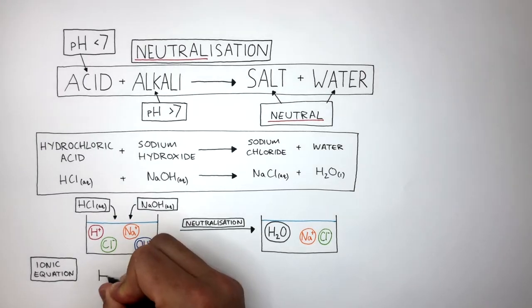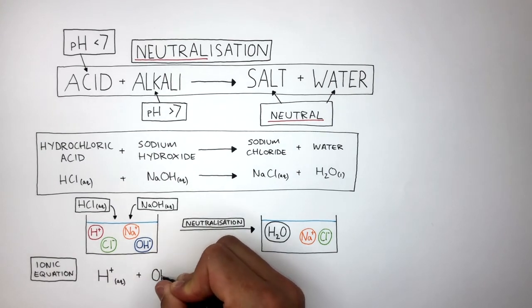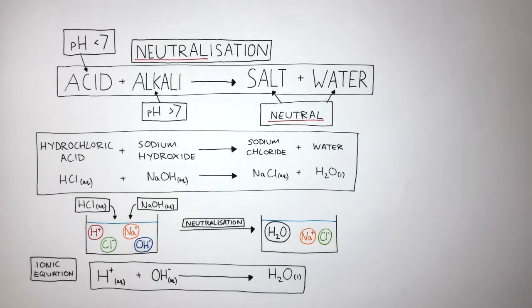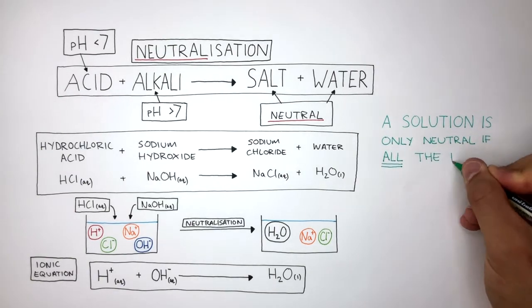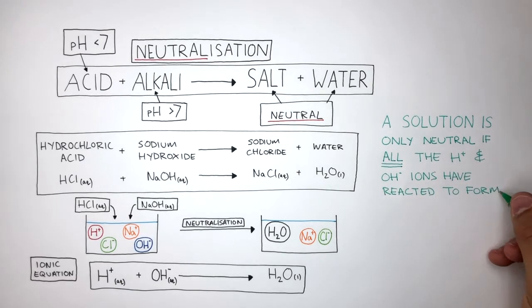The ionic equation is H+ (aq) plus OH- (aq) reacts to form H2O (l). A solution is only neutral if all the H+ and OH- ions have reacted to form H2O.